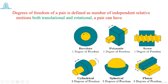For a spherical pair, there are three degrees of freedom. These three degrees are: rotation about the x-axis, rotation about the y-axis, and rotation about the z-axis. So rotational motion about three axes is possible, but linear translation along x, y, or z is not possible. That is why three degrees of freedom — all rotational.